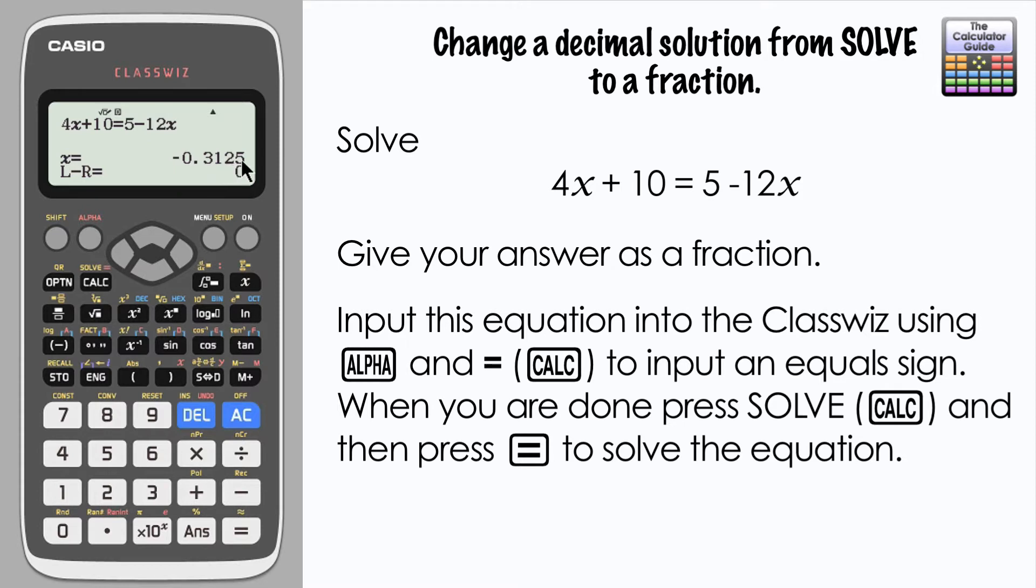And here we have our value of x: negative 0.3125. Now if we have a look at the question, we want to give this answer as a fraction. The ClassWiz has given us that answer as a decimal.